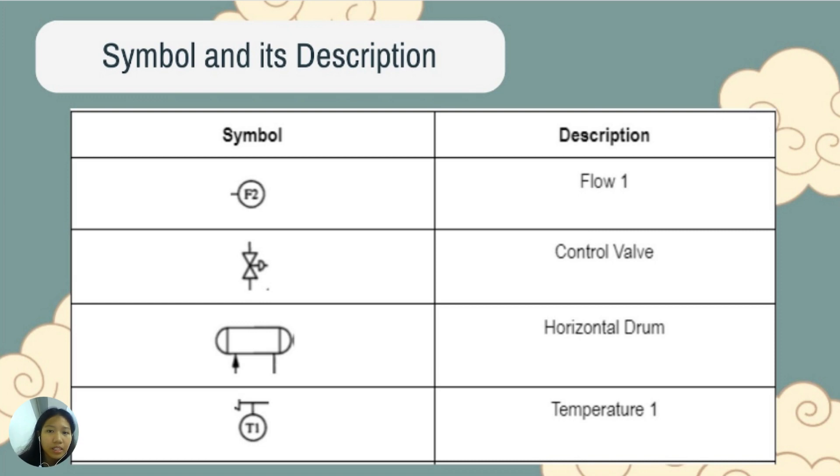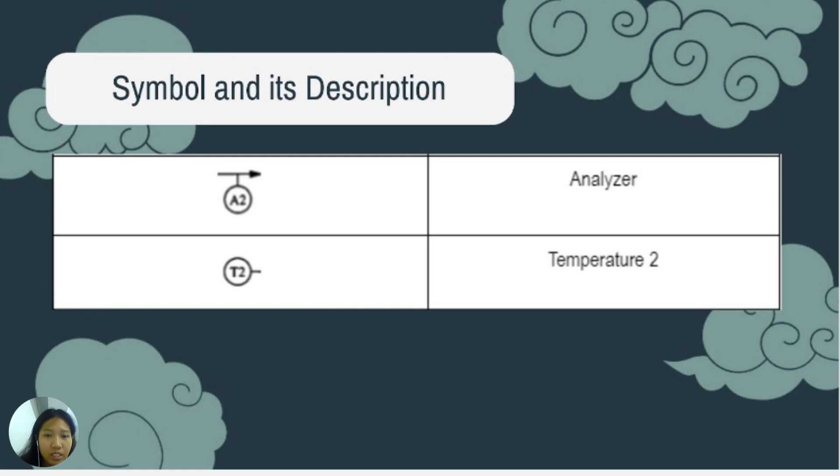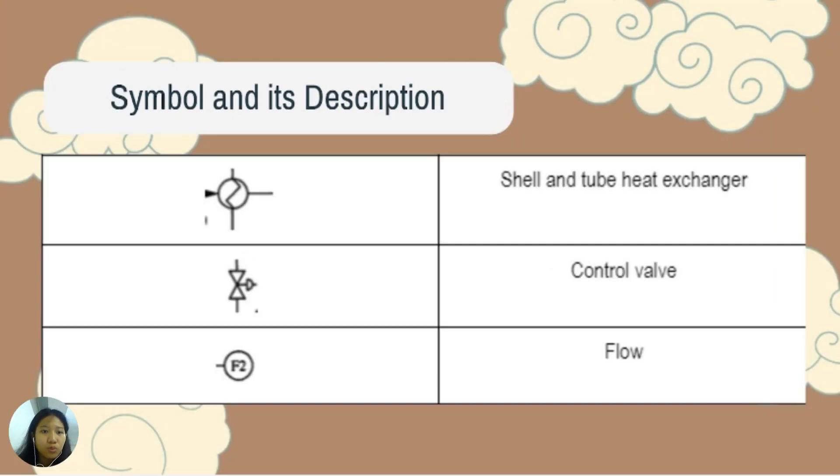And lastly, the schematic symbol and its description. For the first symbol, it is the flow one. Second symbol, which is the control valve. Third is the horizontal drum. Fourth is the temperature one. Next is the analyzer. And then the temperature two. Next is the shell and tube heat exchanger. Control valve flow.